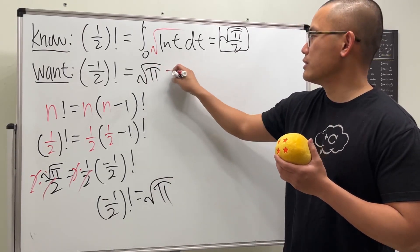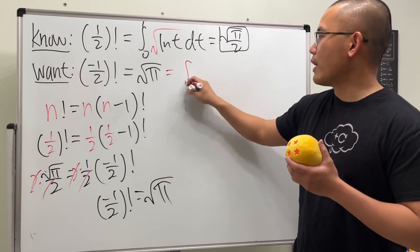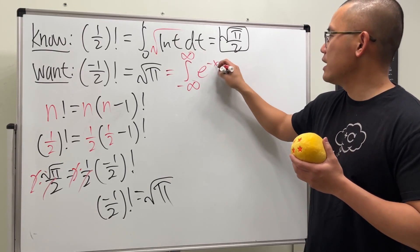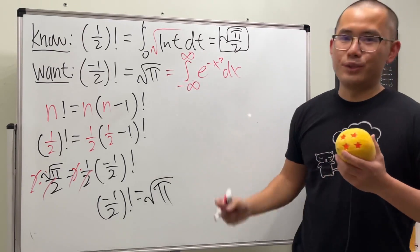But you know what? This right here is actually just the same as the integral going from negative infinity to positive infinity of e to the negative x squared dx. Really cool, huh? Thank you very much. Let's go.